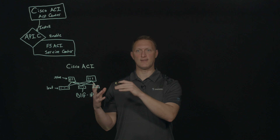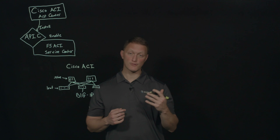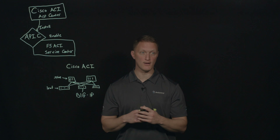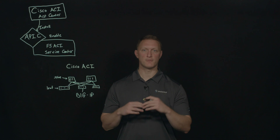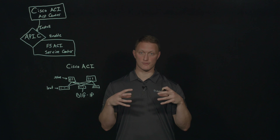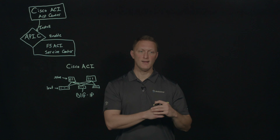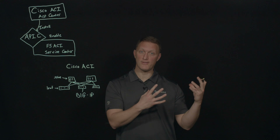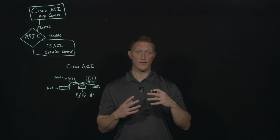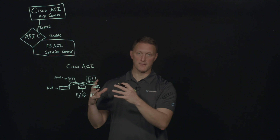Cisco ACI is the Application-Centric Infrastructure. It's designed to be infrastructure for software-defined networking. As SDN has grown in popularity over the past several years, Cisco took a step back and said, let's create an infrastructure specifically designed for SDN-type capabilities. This infrastructure was built with the application in mind to make it easy to deploy and manage. That's what Cisco ACI is founded on.